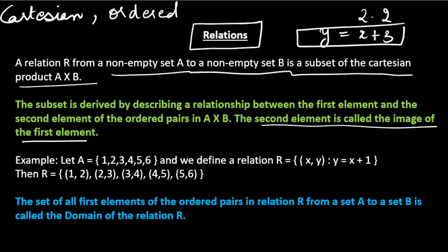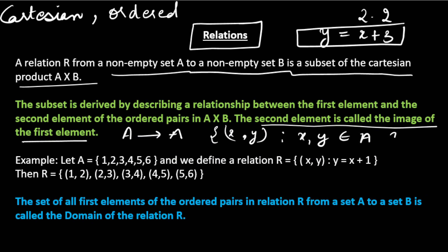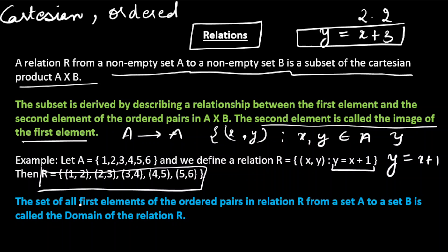The second element is called the image of the first element. Now another example — relation from A to A means both x and y belong to set A. The relation I have taken is y = x + 1. When x = 1, y = 2; when x = 2, y = 3. We can find the elements of any relation by knowing the relationship between the first and second element of the ordered pair.